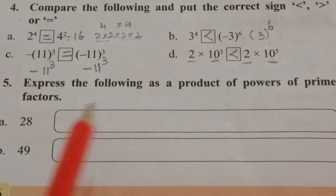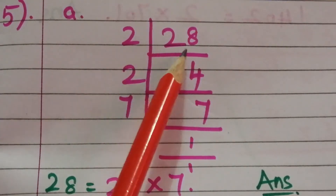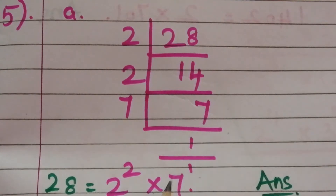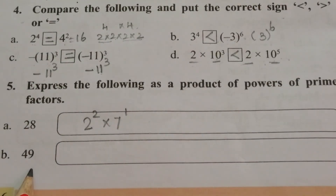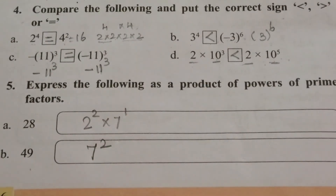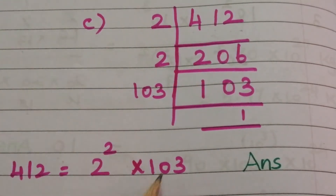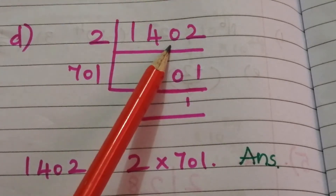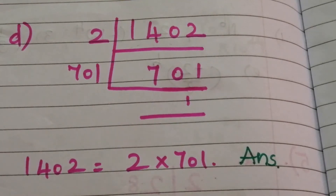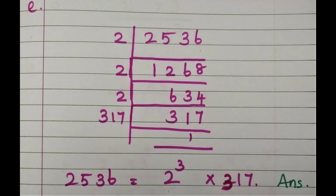Express the following as a product of powers of prime factors. We have to factorize 28 and write it in exponential form. Factorizing 28, we get 2 square into 7 power 1. Problem B: 49 is 7 into 7, so 7 square in exponential form. Problem C is 412: factorizing gives 2 square into 103. Problem D is 1402: factorizing gives 2 into 701. Problem E is 2536: factorizing gives 2 cubed into other factors.